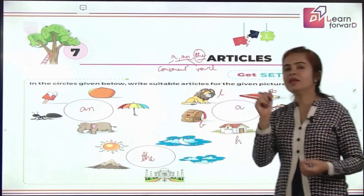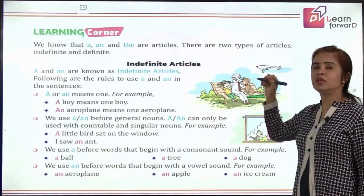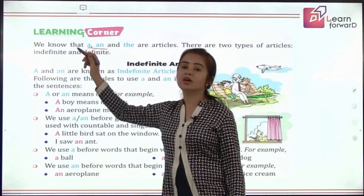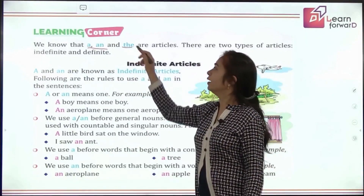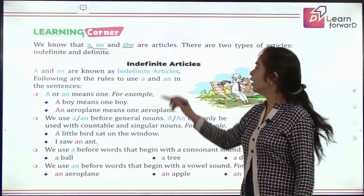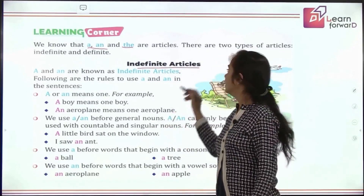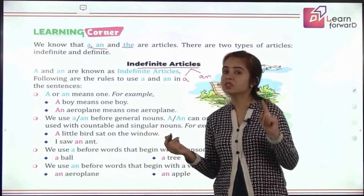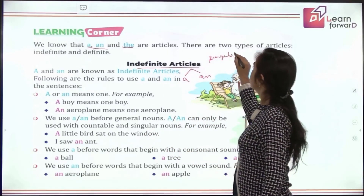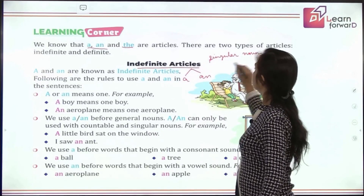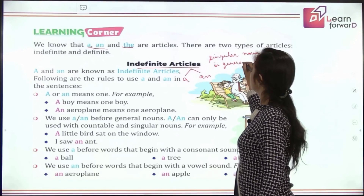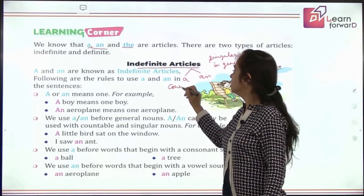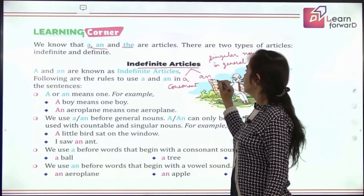So that was a quick recap. There are two types of articles. One is the indefinite article, which includes a and an. The other is the definite article, which means particular — and there we have only one article. A and an are indefinite articles. We use them when we talk about something in general, specifically a singular noun — meaning we are not talking about anything particular.